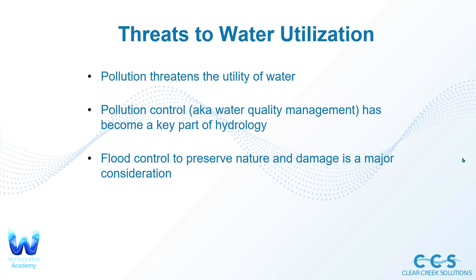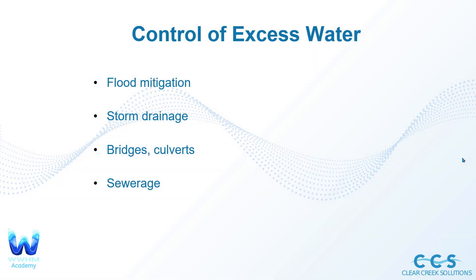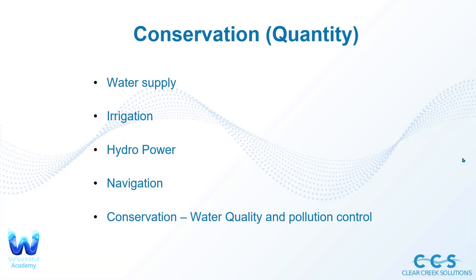The analysis of water quality is going to be part of your stormwater quantity and hydrologic analysis. Flood control can be used to preserve nature, and minimizing damage is a major consideration. There are a number of ways to control excess water: flood mitigation, storm drainage designs and techniques, bridges built over bodies of water, culverts to funnel water, and sewerage to manage sewer and solids. That last aspect is more of environmental engineering but is also an important part of water resources engineering as a whole.